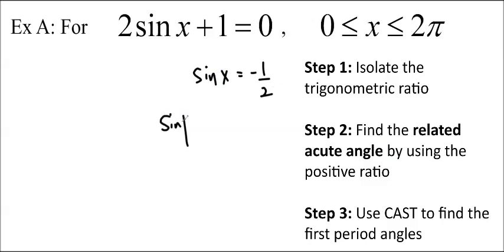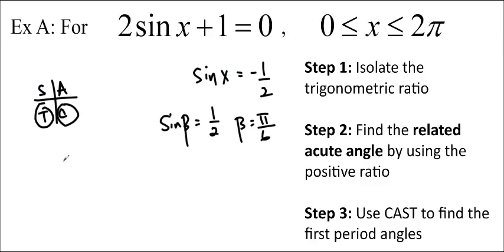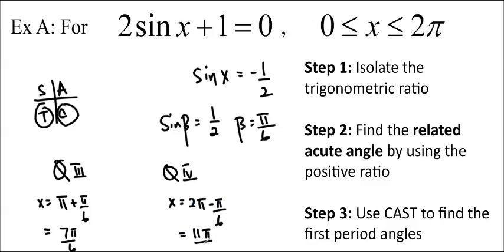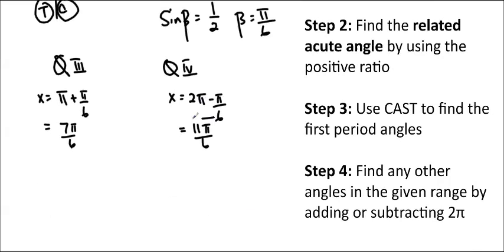So we're going to do sine beta equals 1 half. And if you can figure out what the exact value of the angle is, you should. And so we recognize 1 half and we know beta is equal to pi over 6. And then we'll write the quadrant. So sine is negative in quadrants 3 and 4. So we'll write that out, quadrant 3, quadrant 4. So x is equal to pi plus pi over 6, which is 7 pi over 6. And x is equal to 2 pi minus pi over 6, which is 11 pi over 6. And there we go, we got our answers.